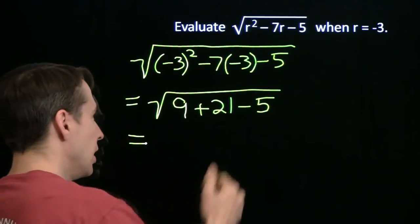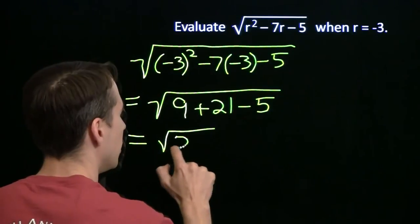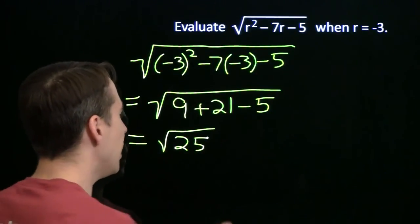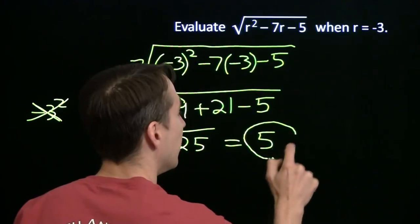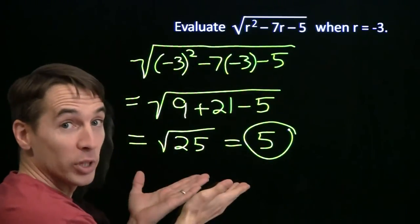9 plus 21 is 30. Minus the 5 gives us 25. And of course, the square root of 25 is 5. That's it. And we're done.